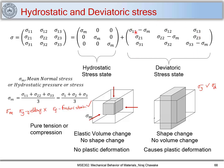Now, I want you to look at this deviatoric stress state and find the invariants. If you recollect, we get three invariants: J1, J2, and J3. J1 is the trace of the matrix, that is, the sum of diagonal elements. J2 is the summation of minors of diagonal elements, and J3 is the determinant. Using the definition of sigma m, you can clearly find that J1 equals zero. Now I want you to find J2 and J3 for the deviatoric stress state.